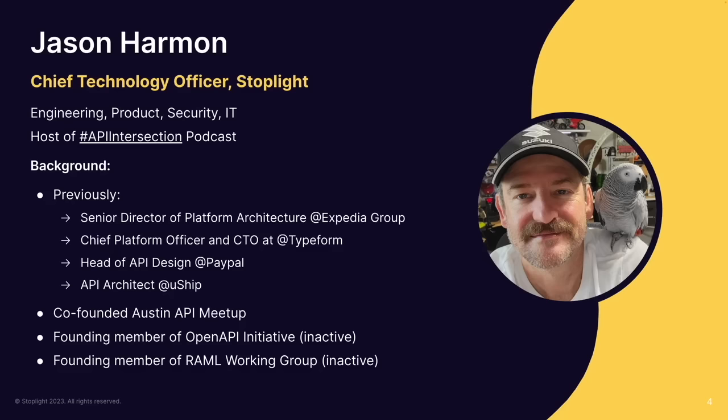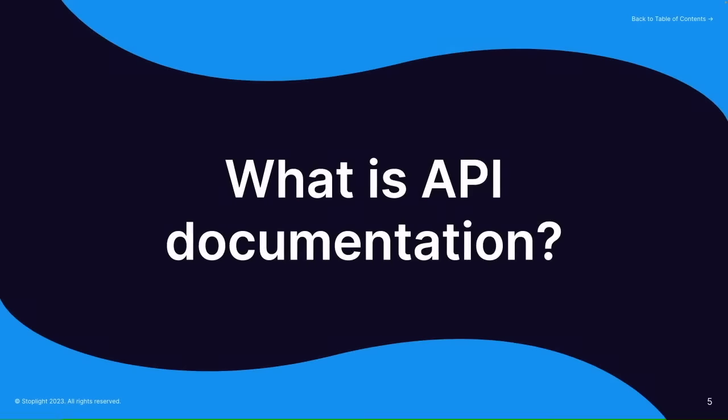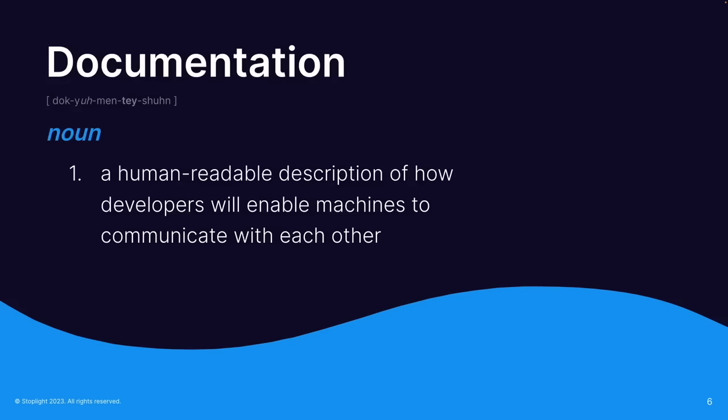So let's define what we mean by API documentation. Documentation is a big nebulous word. In simple terms, this is a human-readable description of how developers will enable machines to communicate with each other. Documentation is for humans to read and understand — the developer aspect is not the whole story.